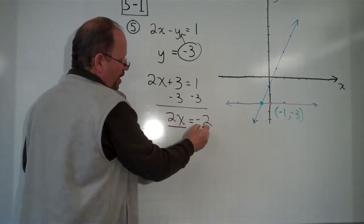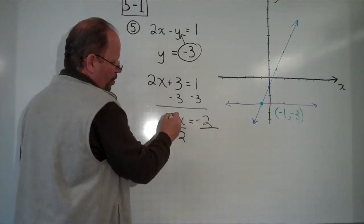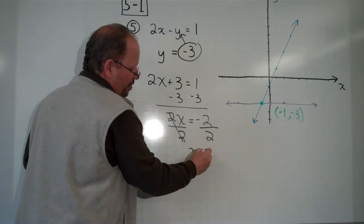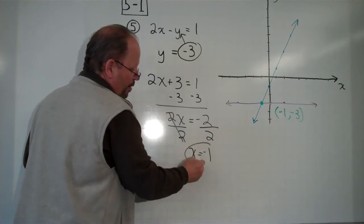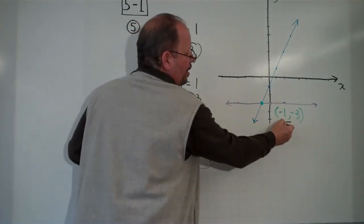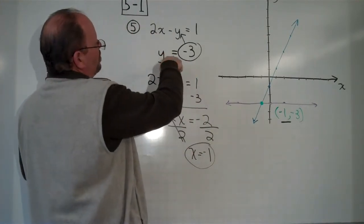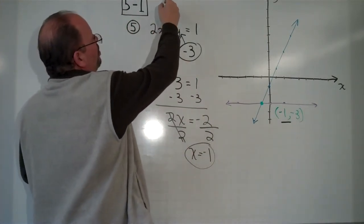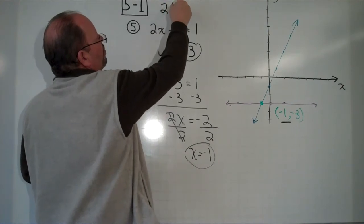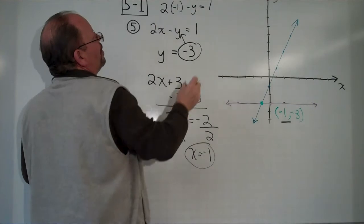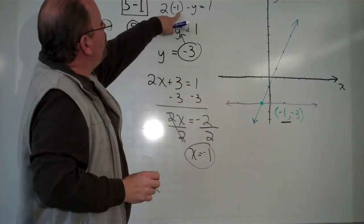Then divide both sides by 2. We would find that x equals negative 1, which is exactly what x equals. Then we would take x and put it into the equation. 2 times negative 1 minus y equals 1. And solve this equation for y.